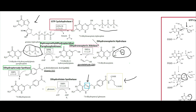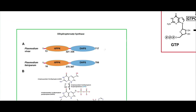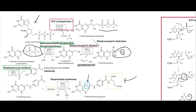The hydroxymethyldihydropterin pyrophosphokinase and dihydropteroate synthase are actually bound together as a single two-domain protein, which is why I have them both boxed in green.